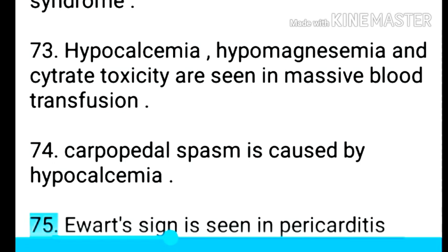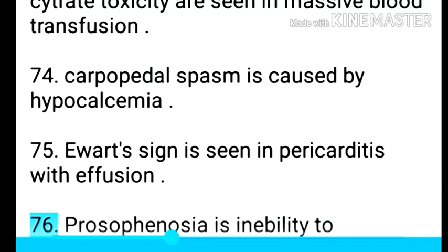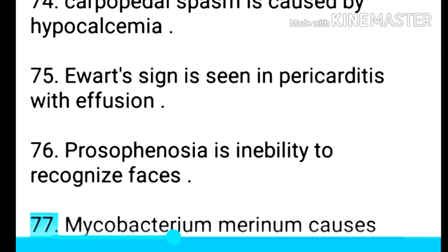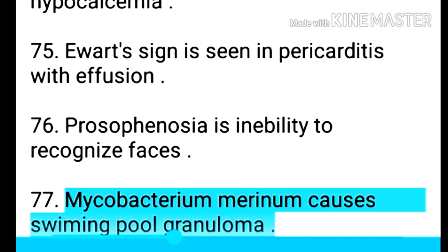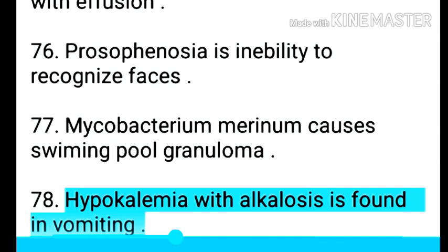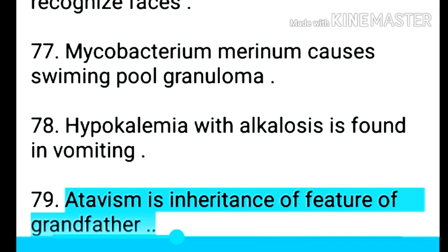Point 76: Ewart's sign is seen in pericarditis with effusion. Point 77: Prosopagnosia is inability to recognize faces. Point 78: Mycobacterium marinum causes swimming pool granuloma. Point 79: Hypokalemia with alkalosis is found in vomiting. Point 80: Atavism is inheritance of a feature of the grandfather.